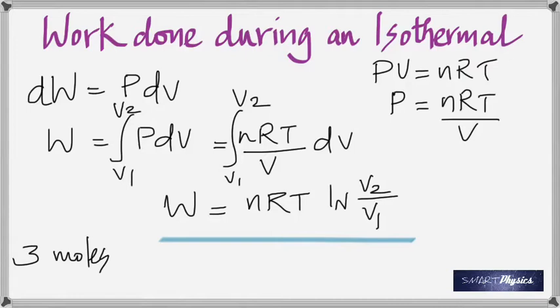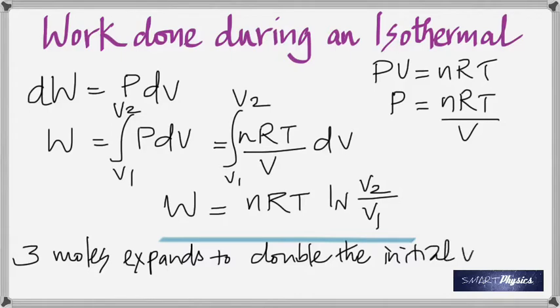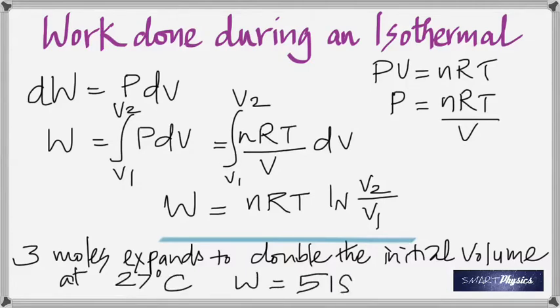Work done during an isothermal change. To calculate the work done during an isothermal change, you need to know the number of moles. The universal gas constant, you need to know the temperature, it should be in Kelvin again, and you need to know the initial and final volumes. There is an example coming up. If you have three moles, and if it expands to double the initial volume, three moles expanding to double the initial volume, what's the work done? And at 27 degrees Celsius. So work done is 5186.5 joules. Check it out, please.